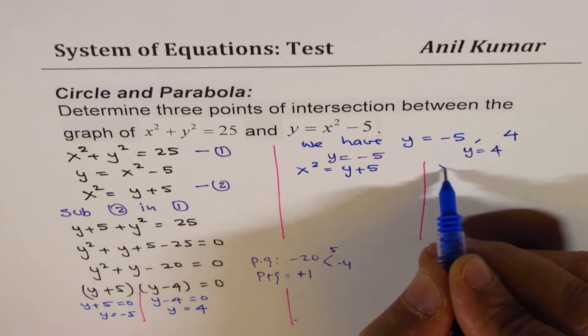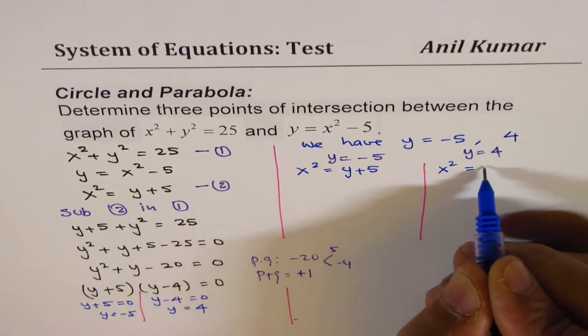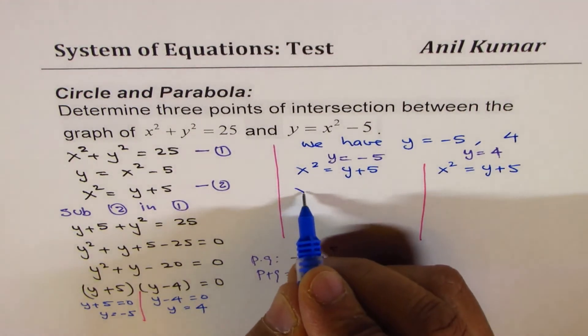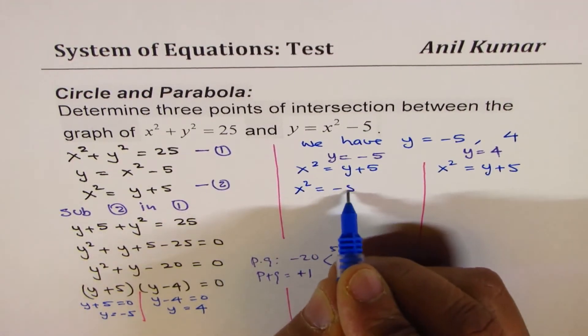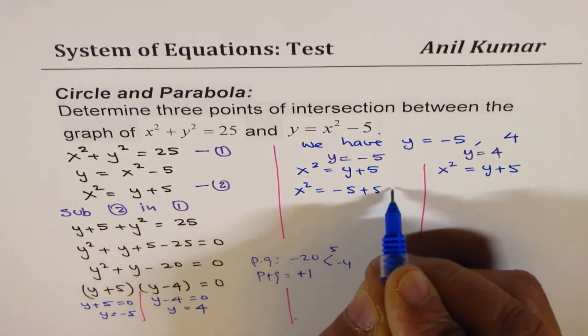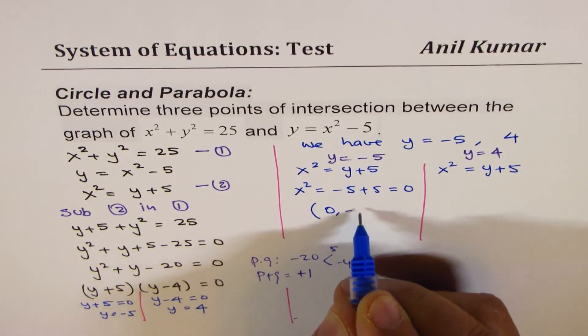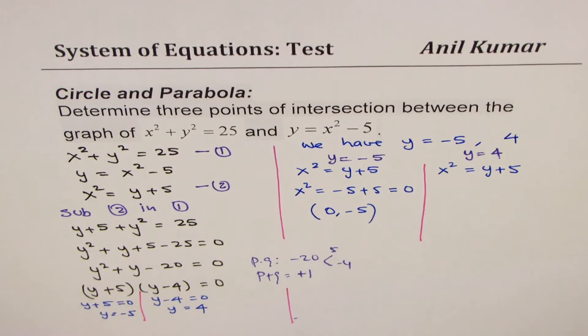The equation is x squared equals y plus 5. If I substitute minus 5 here, I get x squared equals minus 5 plus 5, which is 0. And therefore, the point is 0 comma minus 5. So we get one point of intersection.